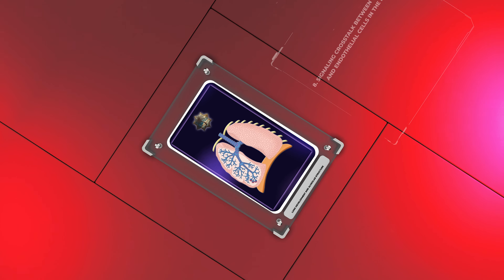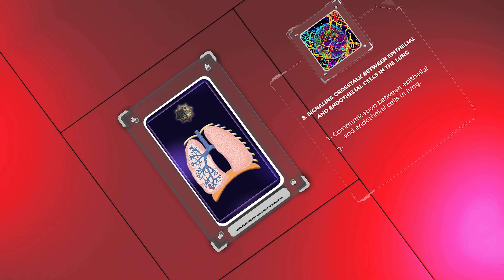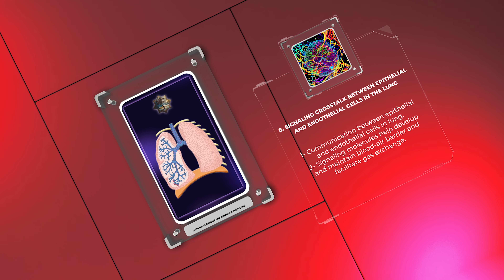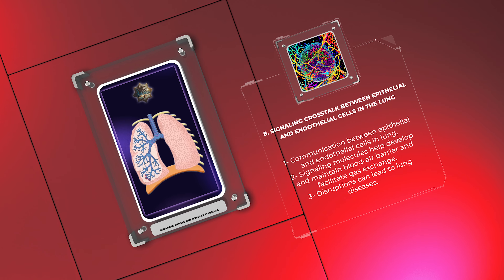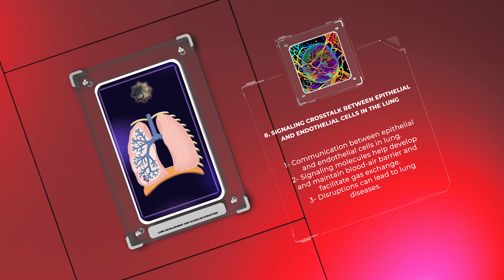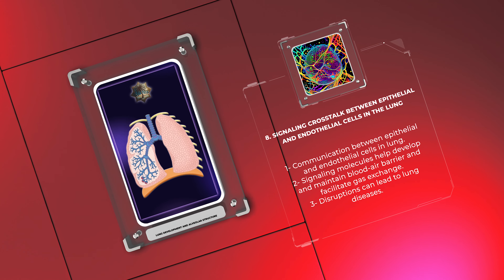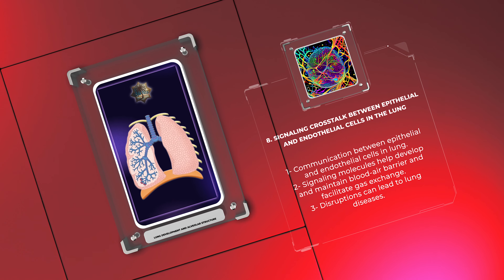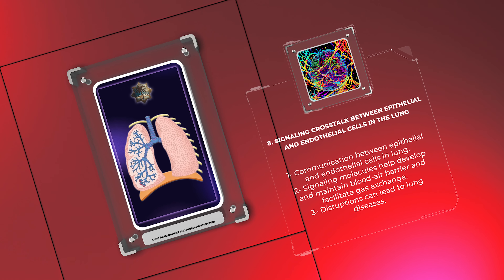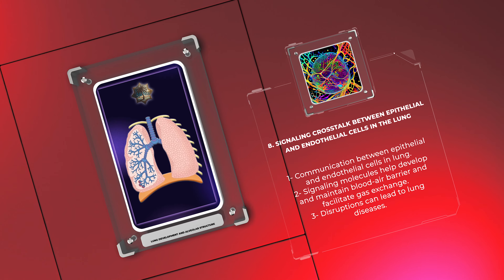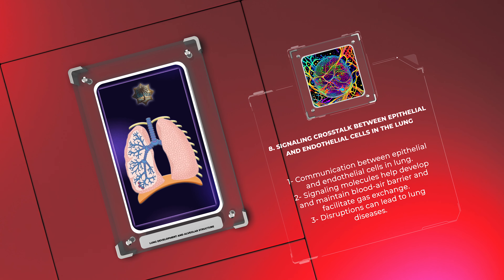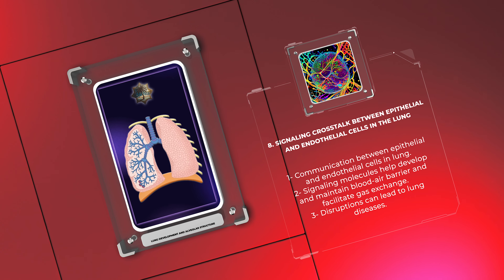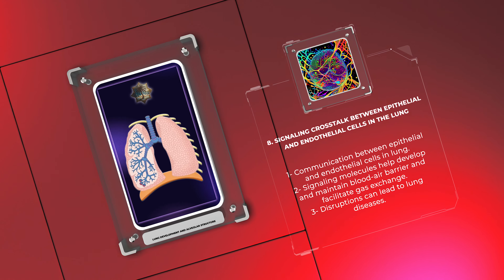In the video on lung development and alveolar structure, we explore the communication between epithelial and endothelial cells in the lung. Through signaling molecules, these cells work together to develop and maintain the blood-air barrier and facilitate gas exchange. Disruptions in this communication can lead to lung diseases.